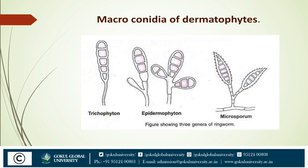Trichophyton has abundant club-shaped or pear-shaped microconidia arranged in clusters, and few pencil-shaped macroconidia. They infect skin, nails, and hair. In Microsporum, there are few microconidia and many large fusiform to spindle-shaped macroconidia. They infect hair and skin. Epidermophyton has no microconidia. Macroconidia are multinuclear, club- or pear-shaped, 1-2-5 cells, 8-30 micrometers in size, and typically arranged in clusters. They infect skin and nails.